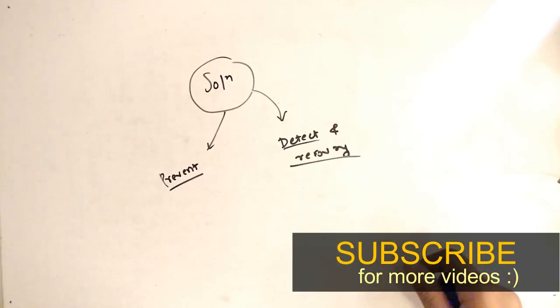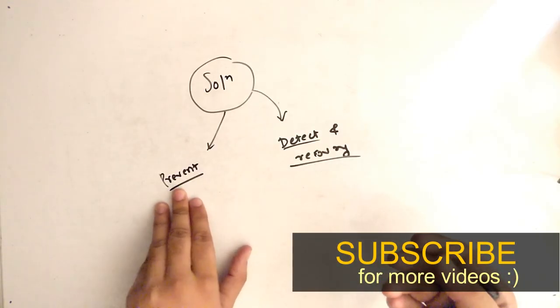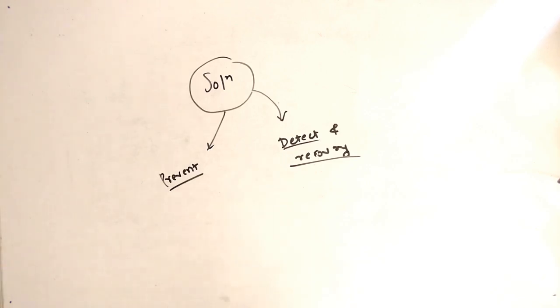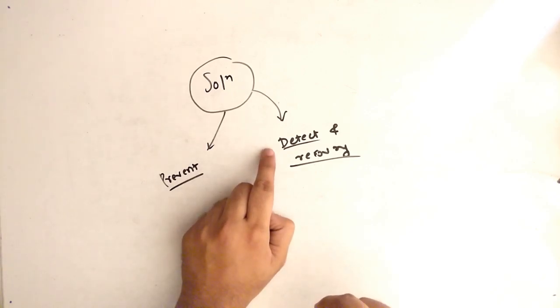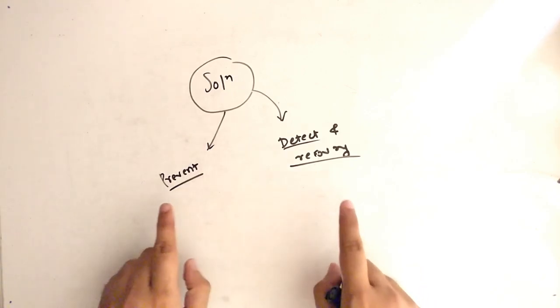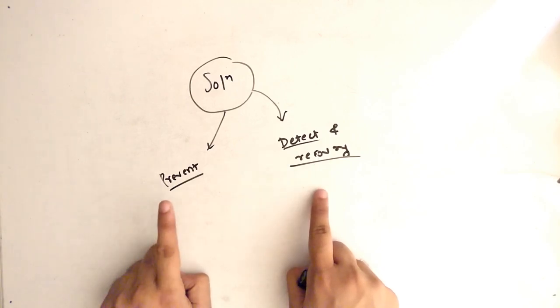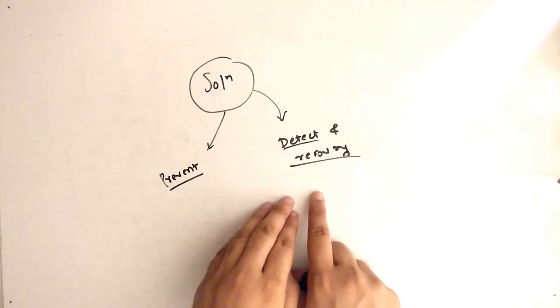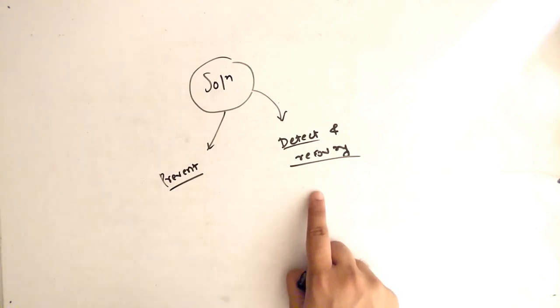Now the solution for deadlock is either we can prevent the deadlock, or suppose deadlock has happened, we can detect the deadlock and recover from it. So there are two types of solutions for deadlock. First we can prevent the deadlock, second if deadlock has happened then we have to detect it and further we have to solve the deadlock.